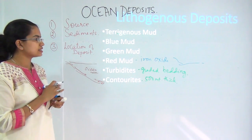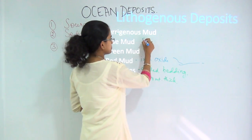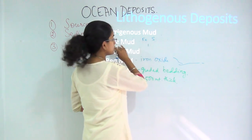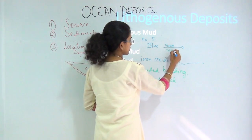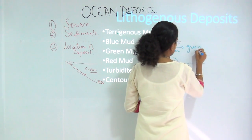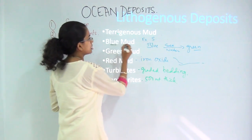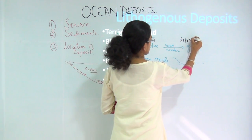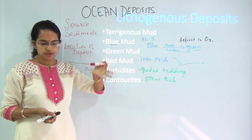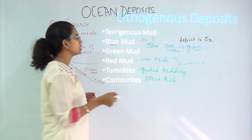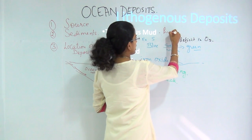Green mud and red mud are somewhat interrelated. Green mud is rich in iron and sulphur. When blue mud reacts with sea water, it gives rise to green mud — this is how we have the formation of blue mud and green mud. Blue mud is deficient in oxygen. Terrigenous mud is the mud coming from the flow of the land; since it comes from the soil, it has rich organic content.